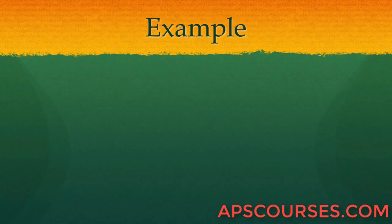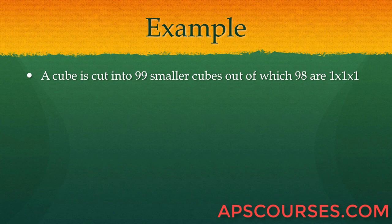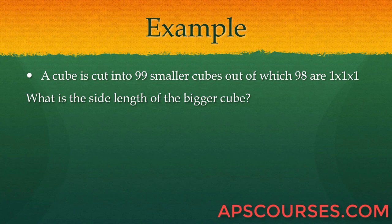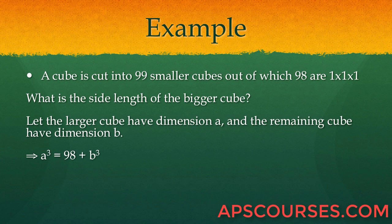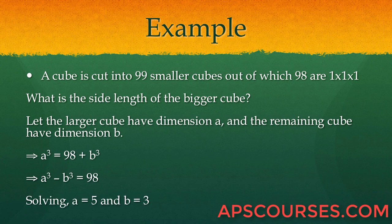Next example: A cube is cut into 99 smaller cubes, of which 98 are 1×1×1. We need to find the side length of the original cube. Let the larger cube have dimension A and the remaining cube have dimension B. Therefore A³ = 98 + B³, equating volumes, so A³ − B³ = 98. We find that A = 5 and B = 3, so the side length of the larger cube is 5.